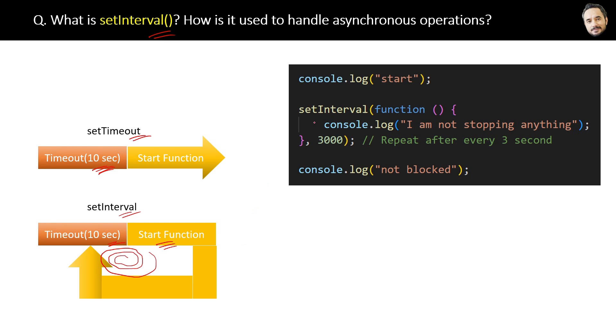It's very similar to setTimeout. We just replaced the setTimeout method with the setInterval method. Here it is also accepting two parameters: first is the function and second is the time. But the output will be different this time.